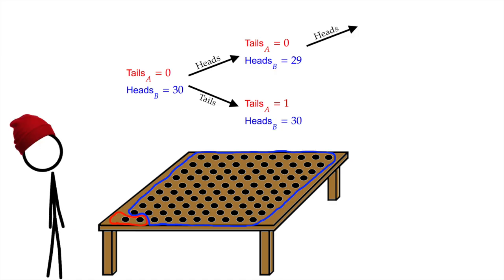If the first coin was heads, and the second one was heads as well, in that case, tails in A is still zero, but heads in B goes down to 28. Yeah?